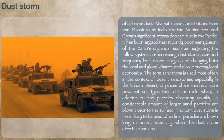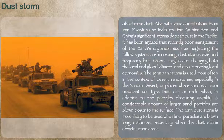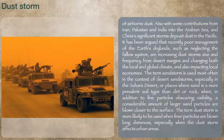This also impacts local economies. The term sandstorm is used most often in the context of desert sandstorms, especially in the Sahara Desert, or places where sand is a more prevalent soil type than dirt or rock, when, in addition to fine particles obscuring visibility, a considerable amount of larger sand particles are blown closer to the surface. The term dust storm is more likely to be used when finer particles are blown long distances, especially when the dust storm affects urban areas.